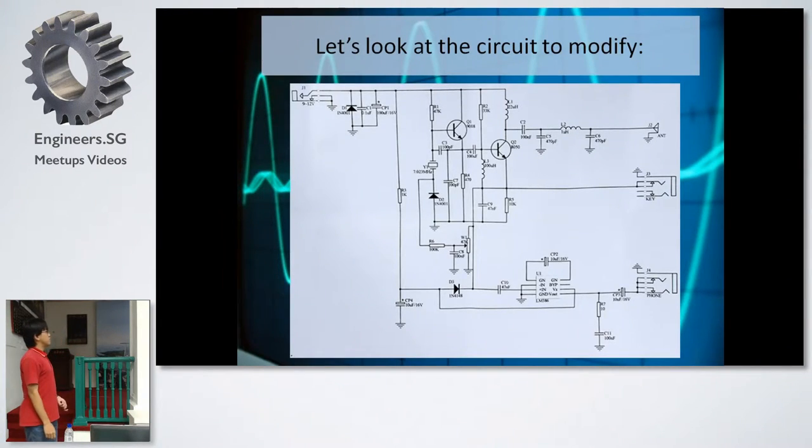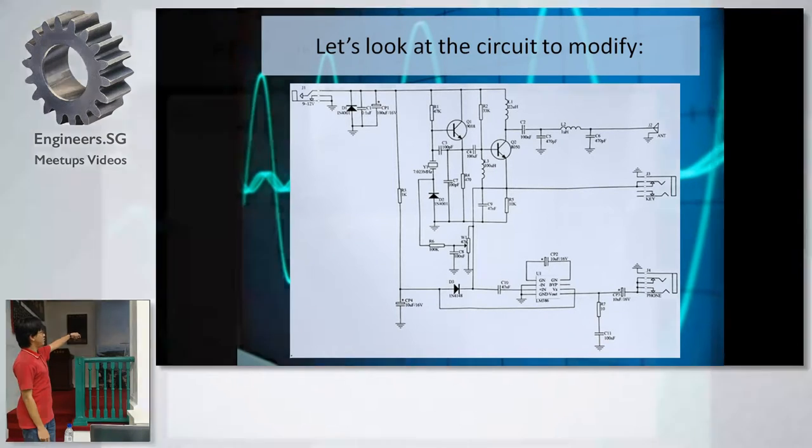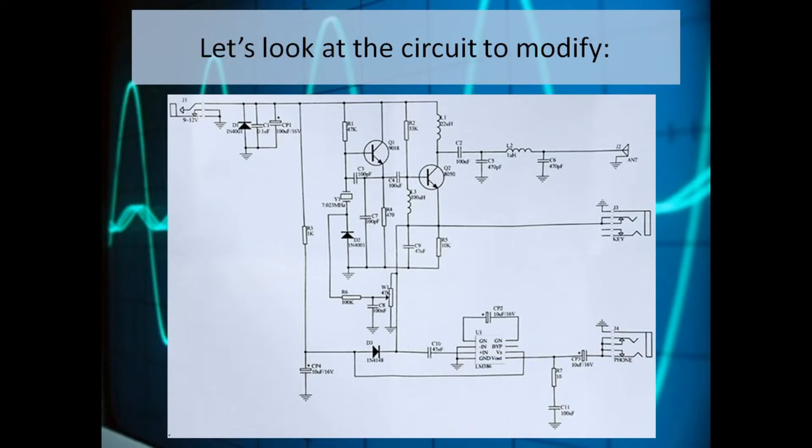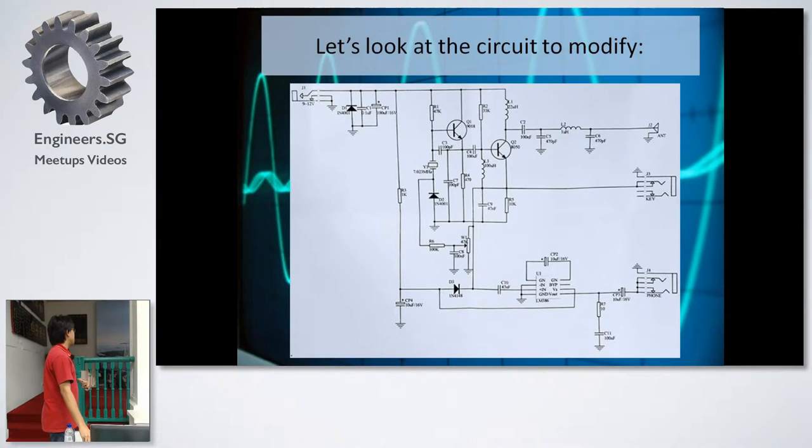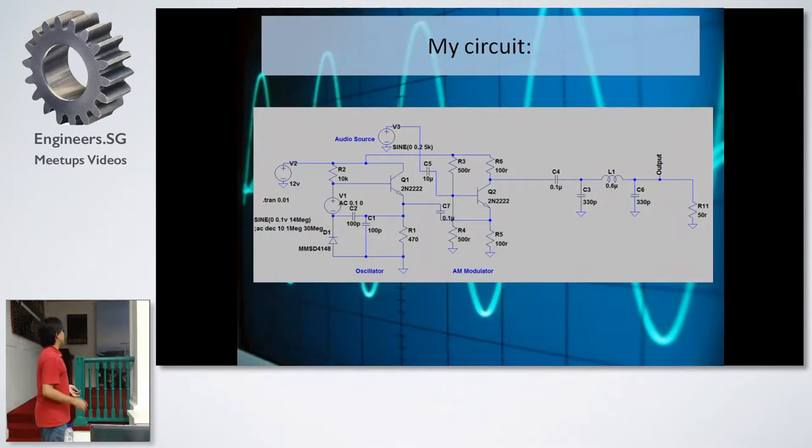This is one of the Morse code transmitters I had for quite some time. As you can see, this whole part here is the oscillator running about 7.23 MHz. You have a power amplifier here and the key just turns it on and off. Here you have your filter and that's it. But in this case, I want to transmit voice. I want to transmit music.